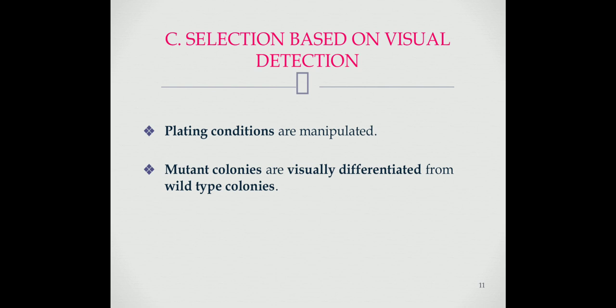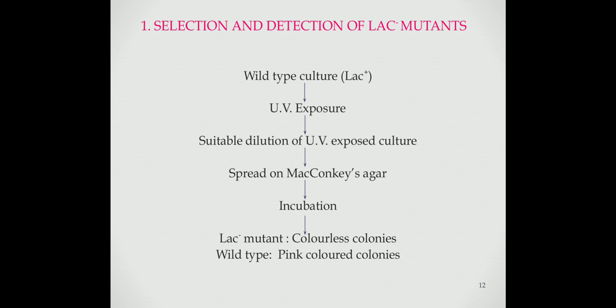The third method includes selection based on visual detection. This method visually distinguishes mutant colonies from wild-type colonies. Plating conditions are manipulated in such a way that mutant colonies are visually distinct from wild-type colonies. The first example is selection and detection of lac negative mutants. The lac negative mutants are unable to use lactose as a source of carbon and energy. Wild-type culture is exposed to mutagen to increase the rate of mutation. The mutagen-exposed culture is then suitably diluted and spread on MacConkey's agar medium. The plates are incubated at suitable temperature for 24 hours. After incubation, lac negative mutants will grow and form colorless colonies, while wild-type organisms will form pink-colored colonies.